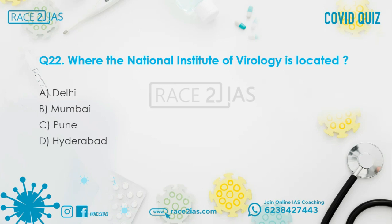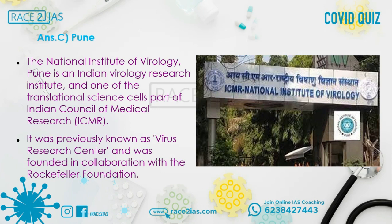Question number 22: Where is the National Institute of Virology located? Option A: Delhi. Option B: Mumbai. Option C: Pune. Option D: Hyderabad. The right answer is Option C, Pune. The National Institute of Virology is an Indian virology research institute and one of the translational science cells, part of the Indian Council of Medical Research (ICMR). It was previously known as the Virus Research Center and was founded in collaboration with the Rockefeller Foundation.